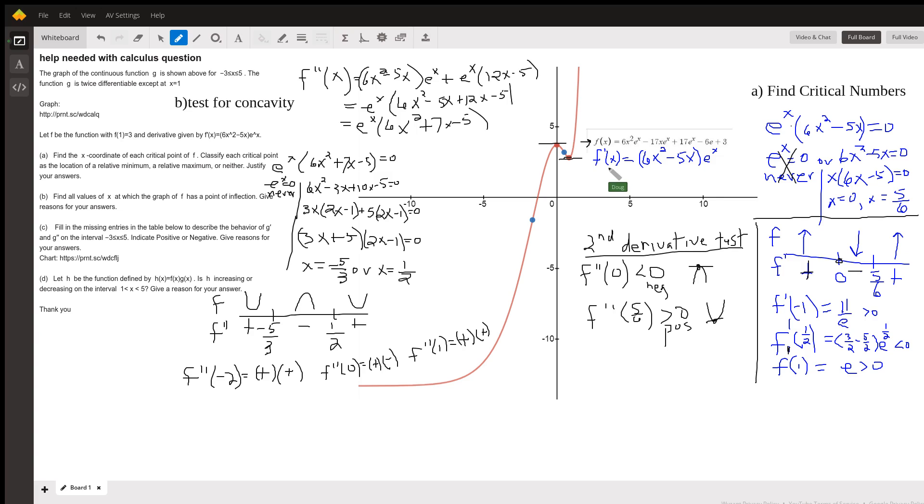If we wanted to actually find out the y-coordinates of those points, we'd plug those critical numbers into the original function, which was not given to us as part of the original problem.